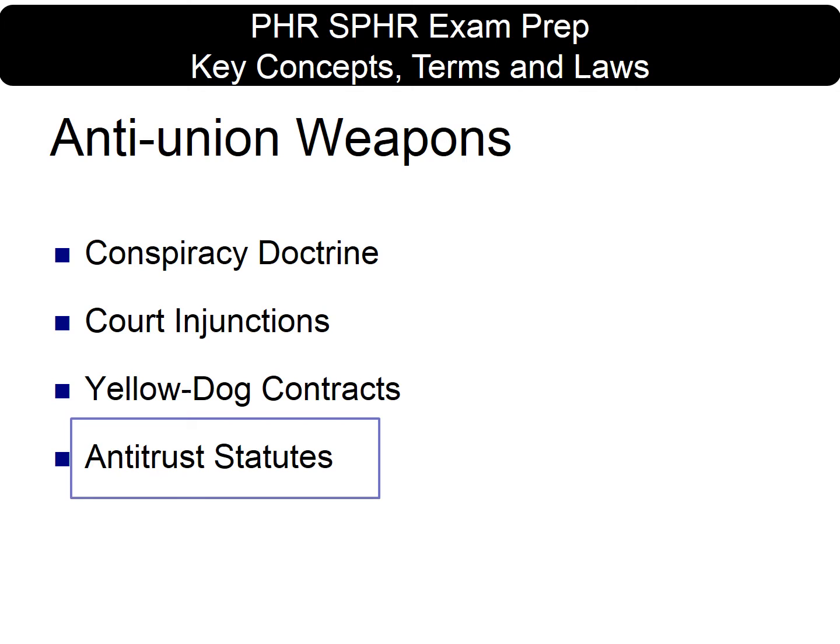Antitrust statutes are used widely today. They are designed to protect consumers from predatory business practices by ensuring that fair competition exists in an open market economy. Union leaders thought the Sherman Antitrust Act of 1890 would protect them from powerful and hostile corporations. Although this law made no specific references to labor organizations, unionists found that it limited a variety of vital union activities. Unions were interpreted by the courts as illegal combinations in restraint of interstate commerce when they attempted to strike an employer or to boycott an employer's products.